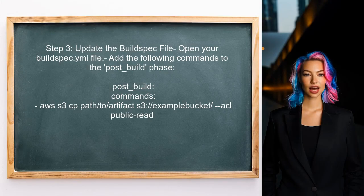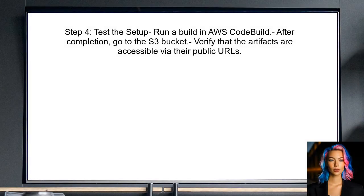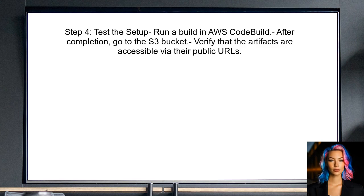After adjusting the bucket policy and encryption settings, update the build spec file in your AWS CodeBuild project. This file controls how the build process runs and can be used to set permissions for the artifacts. Finally, test the setup by running a build in AWS CodeBuild. After the build completes, check the S3 bucket to confirm that the artifacts are publicly accessible.